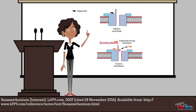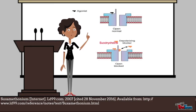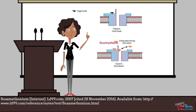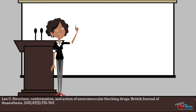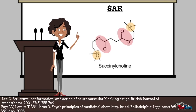Succinylcholine specifically targets the nicotinic receptors and acts by mimicking acetylcholine at the neuromuscular junction. It binds to the postsynaptic nicotinic receptors, activating and opening ion channels which cause depolarization and contraction. It is a partial agonist at ACh receptors. The main structure-activity relationship component in succinylcholine is its two quaternary ammonium groups, which are separated by 10 carbon units.